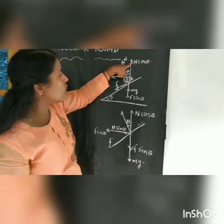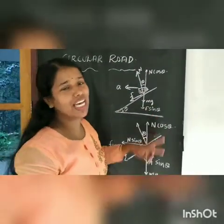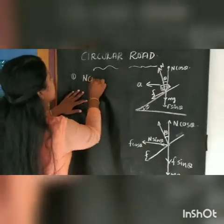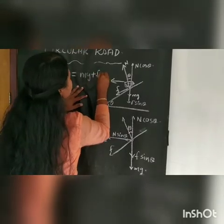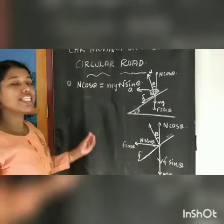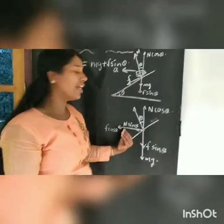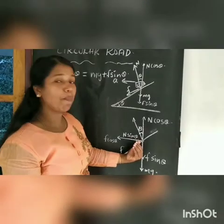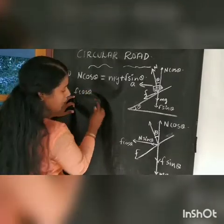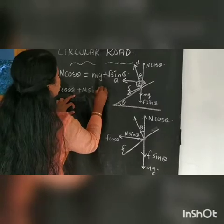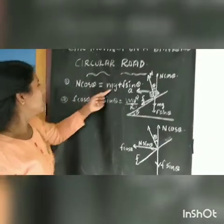Here I have drawn a diagram. The car moves on a banked circular road at angle theta, resolved into two components: cos theta and sin theta. The normal reaction N is resolved: N cos theta acts upward, and frictional force F gives F sin theta. The first equation (vertical): N cos theta equals mg plus F sin theta. For horizontal: F cos theta plus N sin theta equals Mv squared divided by R.